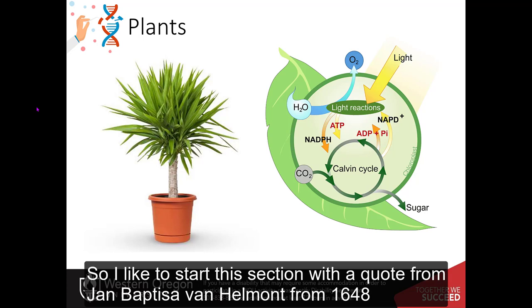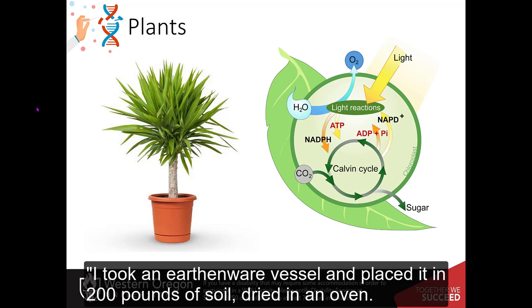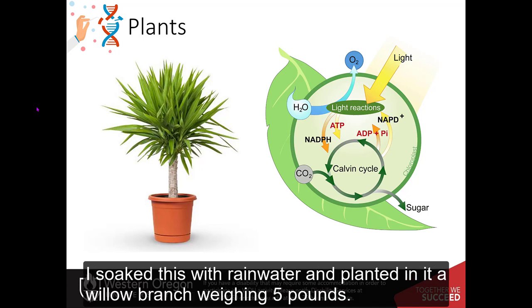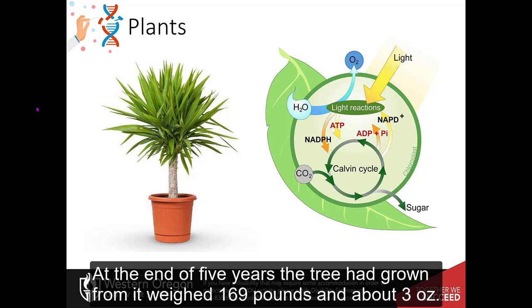So I'd like to start this section with a quote from John Baptista von Helmont from 1648. I took an earthenware vessel and placed it in 200 pounds of soil, dried in an oven, soaked this with rainwater, and planted in it a willow branch weighing 5 pounds. At the end of 5 years, the tree had grown from it, weighed 169 pounds and about 3 ounces.